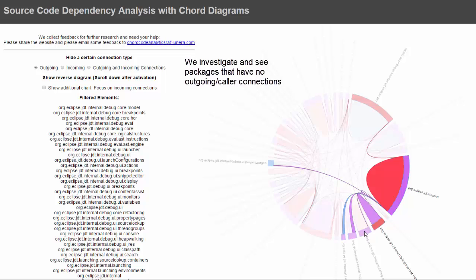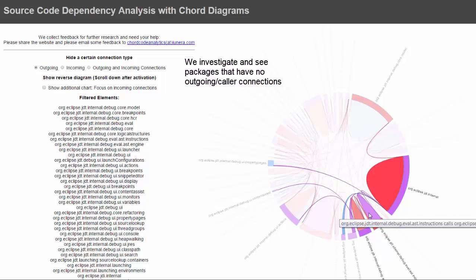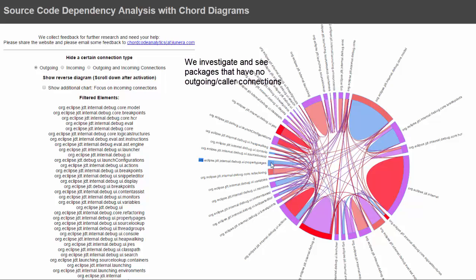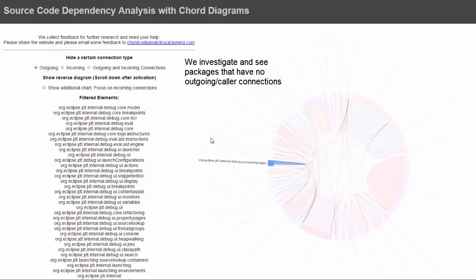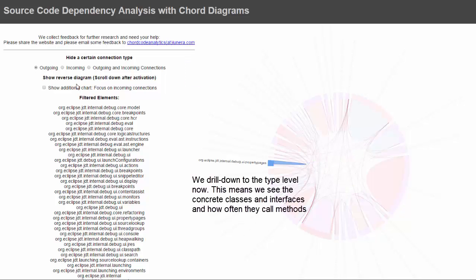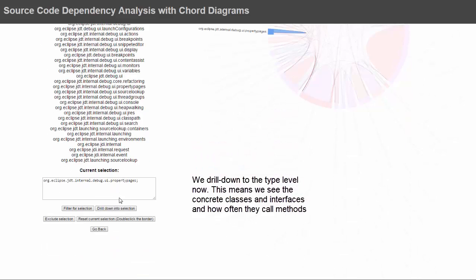I now have a much better overview and do this outgoing method calls game again — I select and select and select and see how many method calls there are. I double click at the border to deactivate the current selection and start with a smaller package to see the outgoing or incoming dependencies, or both — to see that this package is mainly only calling itself.